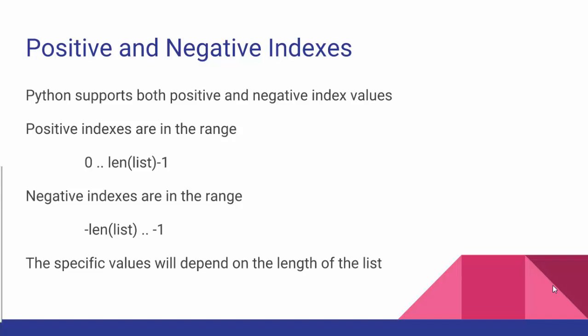Negative indexes are in the range minus the length of the list up to negative 1. And of course the specific values will depend on the length of your list.